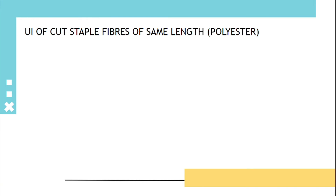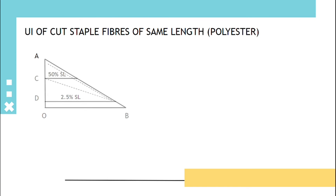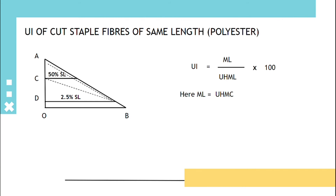For uniformity index of cut staple fibers of the same length (polyester): in the fiber graph diagram, the dotted line from AB is the mean length and from CB is the upper half mean length. Uniformity index equals mean length divided by upper half mean length × 100. Since mean length and upper half mean length are the same, the uniformity index is 100%.